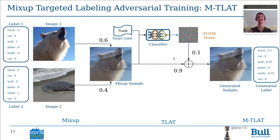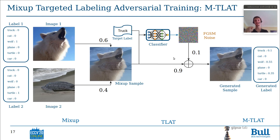These new samples and labels both contain information about the two images used during the MixUp, but also about the target labels used during the adversarial generation. The models trained with MCLate are trained on both clean samples, but also with samples that have been generated with the data augmentation of MCLate.